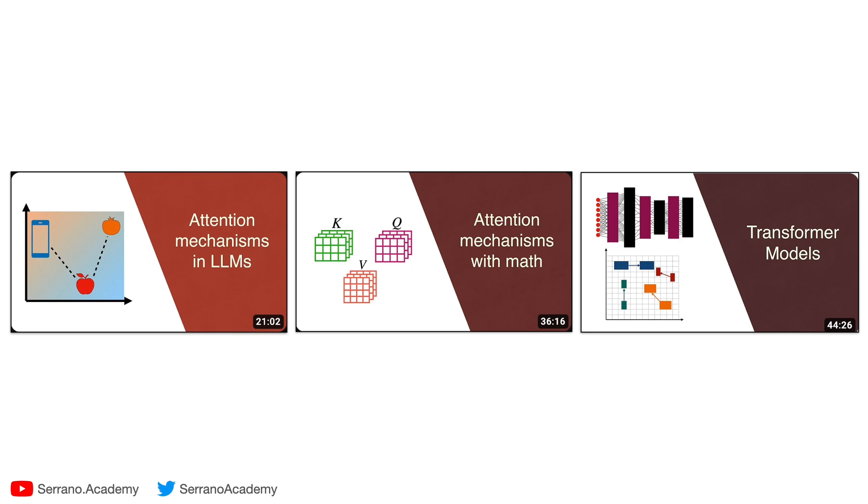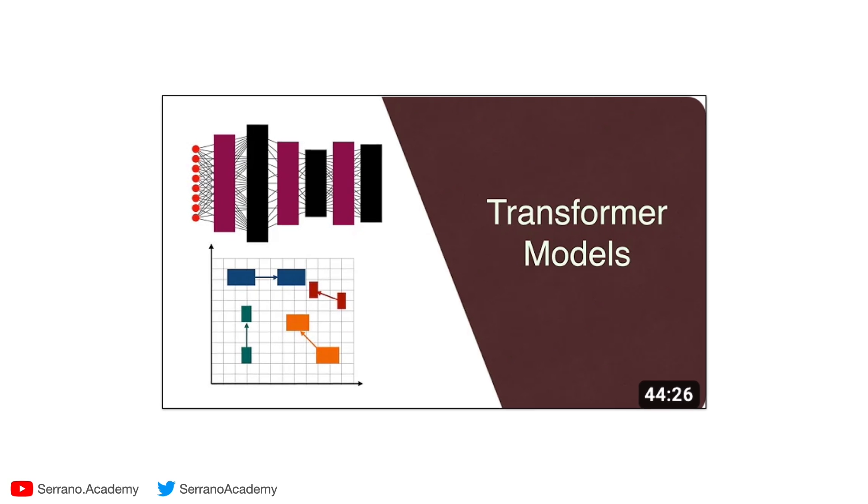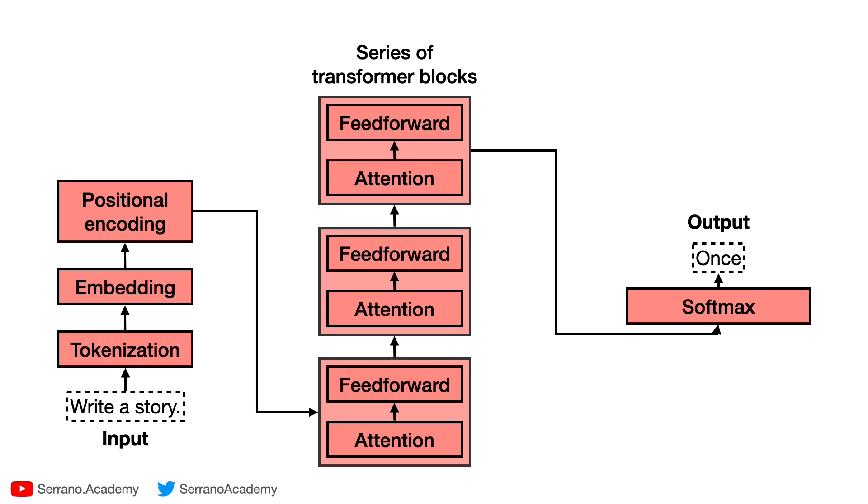If you haven't, I recommend you check out these videos about attention mechanisms and transformer models that describe the whole architecture for transformers. In particular, this video talks about the whole architecture, which I summarize like this - there's a lot of moving parts. One of them is positional encoding.